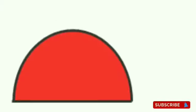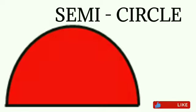Rosette. This is a rosette. Oval. This is an oval. Ellipse. This is an ellipse. Semicircle. This is a semicircle. Heart. This is a heart. Star. This is a star.